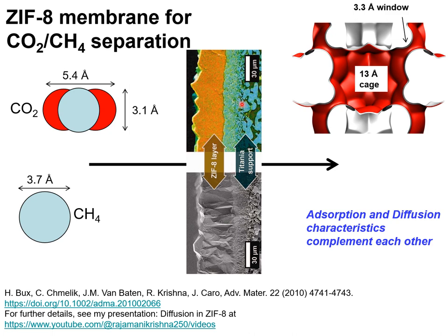Let's see how a microporous membrane is constructed. Take the example of ZIF-8, which consists of cages of 13 Angstrom in diameter, and each cage is separated from adjacent cages by narrow 3.3 Angstrom windows.